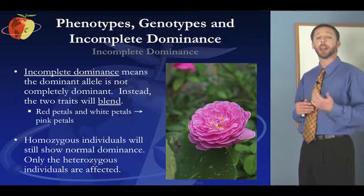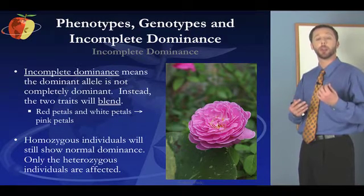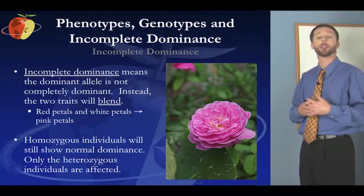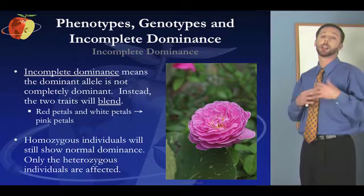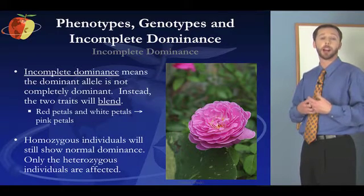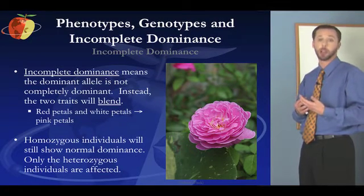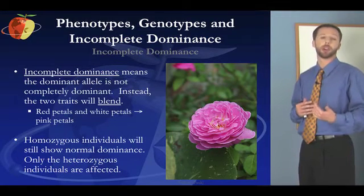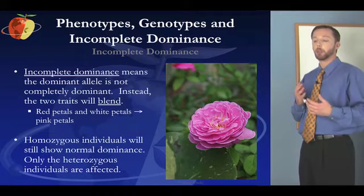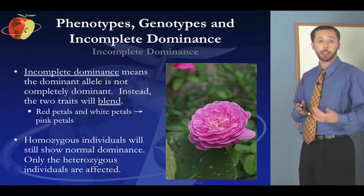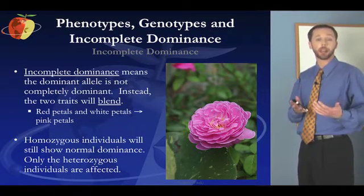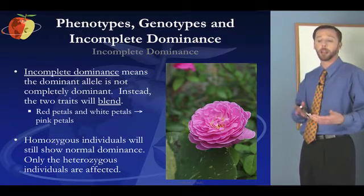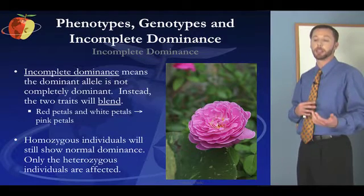You'll only see incomplete dominance with heterozygous individuals, where you have one dominant and one recessive allele. The dominant allele does not completely dominate, so you get partial expression of the recessive trait that blends with the dominant trait to create this new expression. With homozygous individuals, they'll still show normal dominance — two red alleles give you the dominant red color, and two recessives give you the recessive color of white.